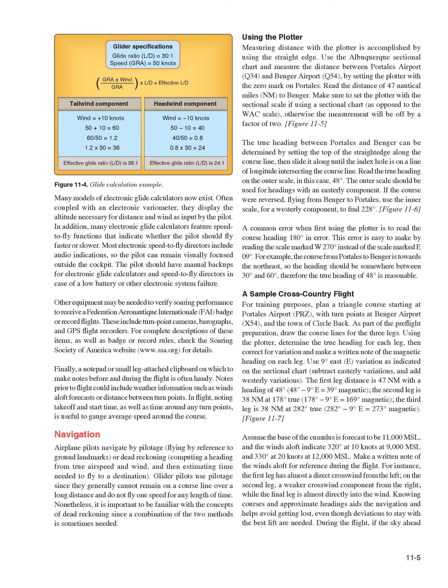Other equipment may be needed to verify soaring performance for FAI badge or record flights, including turn-point cameras, barographs, and GPS flight recorders. For complete descriptions and badge rules, check the Soaring Society of America website at www.ssa.org. A notepad or small leg-attached clipboard for making notes before and during the flight is also handy. Notes prior to flight could include weather information such as winds aloft forecasts or distances between turnpoints. In flight, noting takeoff and start time, as well as time around turnpoints, is useful to gauge average speed.